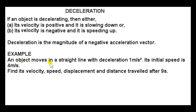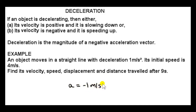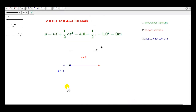An object moves in a straight line with deceleration 1 meter per second squared. Its initial speed is 4 meters per second. Deceleration is the magnitude of a negative acceleration vector. Whether an acceleration vector is positive or negative depends on the convention — whether we take vectors to the right as positive. So the deceleration is 1 m/s², meaning the acceleration is minus 1 meters per second squared. I've set a equal to minus 1, so that's a vector pointing to the left, and the initial speed is 4.